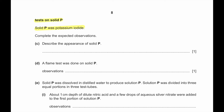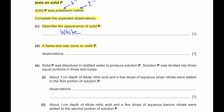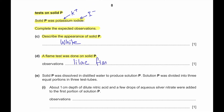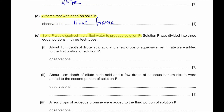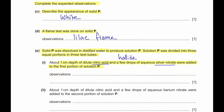Test on solid P: solid P is potassium iodide, which contains potassium ions and iodide ions. Describe the appearance of solid P — since it is potassium iodide, the appearance will be white; every group 1 salt is white in color. A flame test was done on solid P: potassium gives a lilac flame. Solid P was dissolved in distilled water to produce solution P. Dilute nitric acid followed by aqueous silver nitrate was added to the first portion — this is a test for halide. Since iodide is present, we would observe a yellow precipitate.